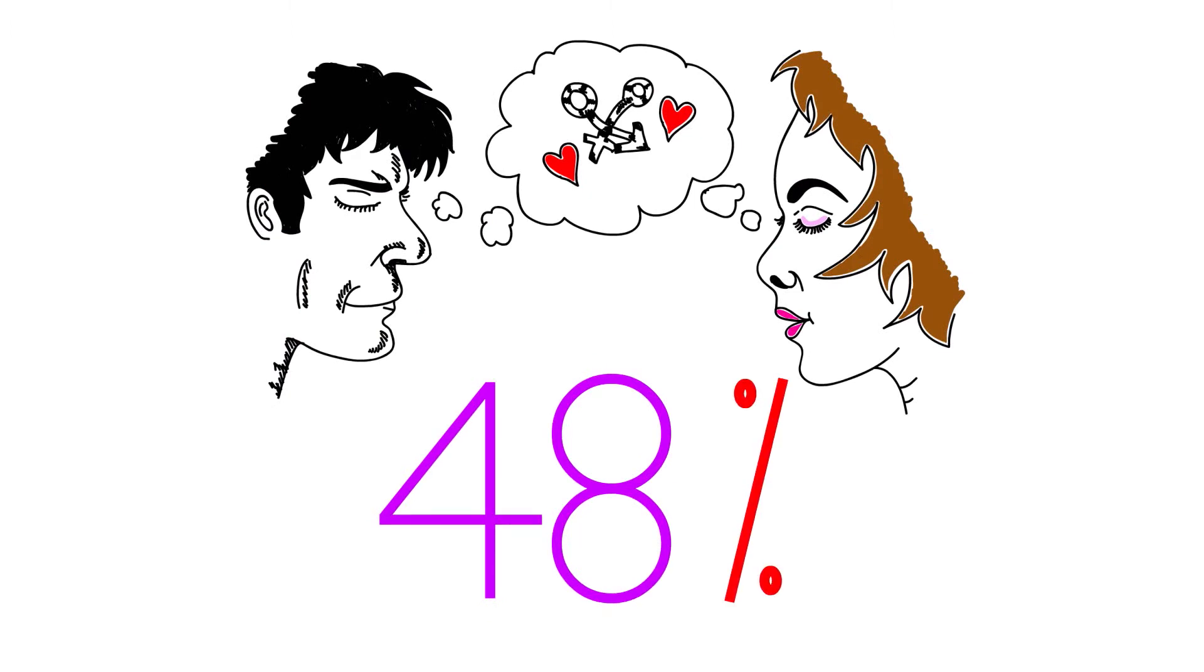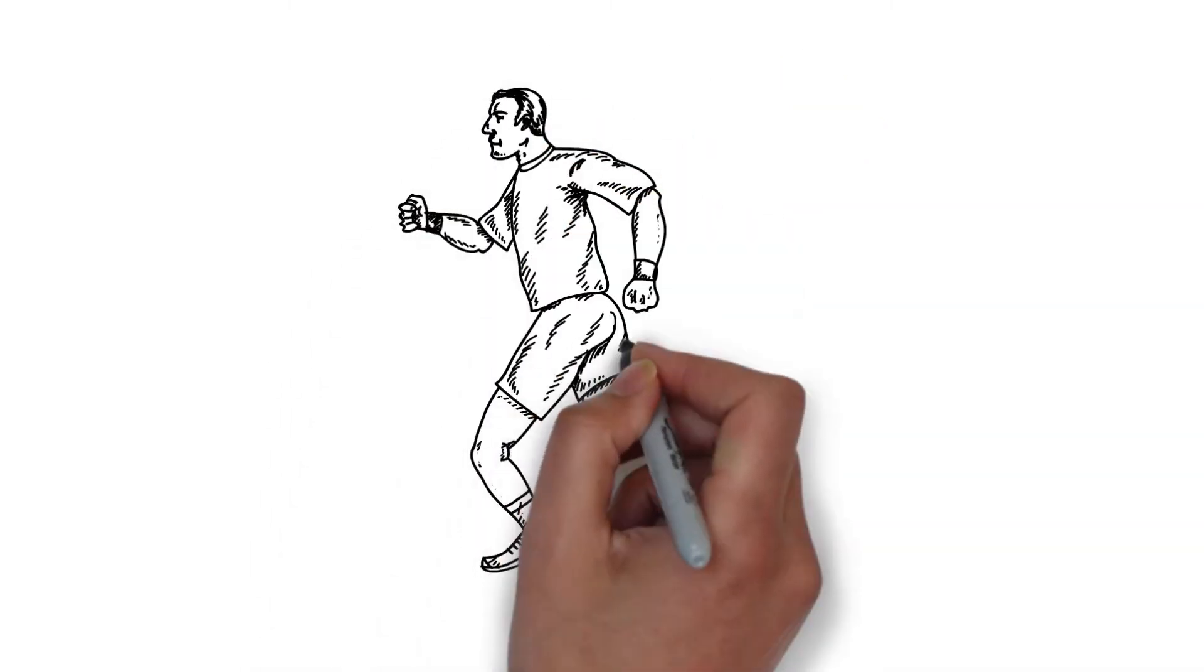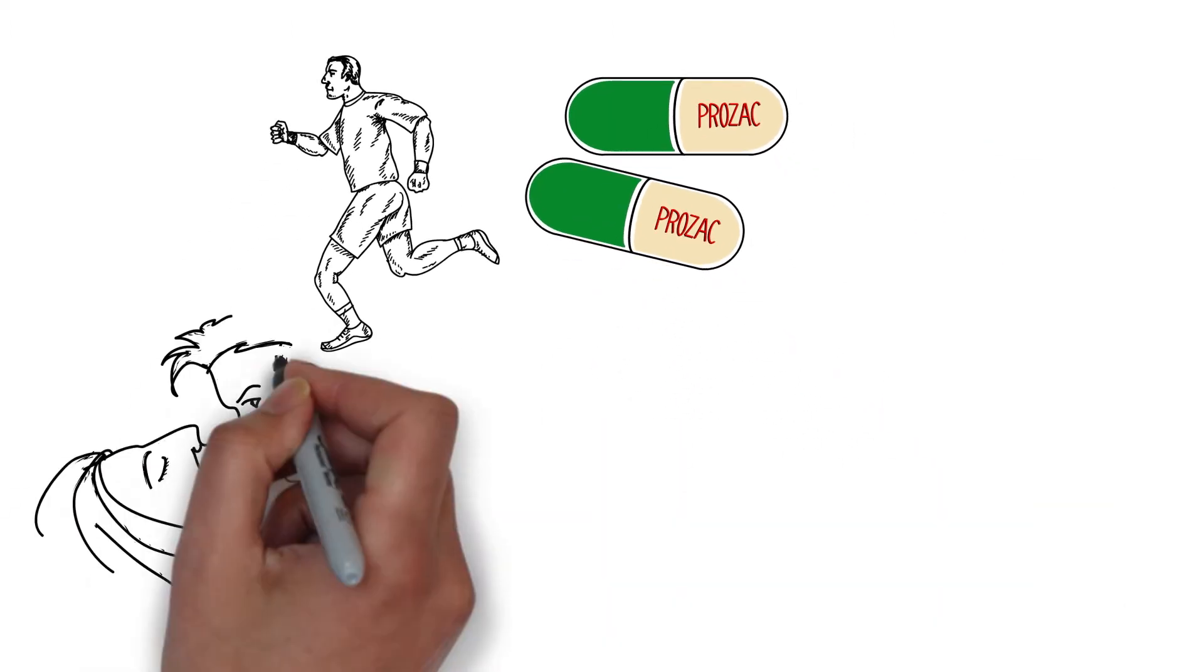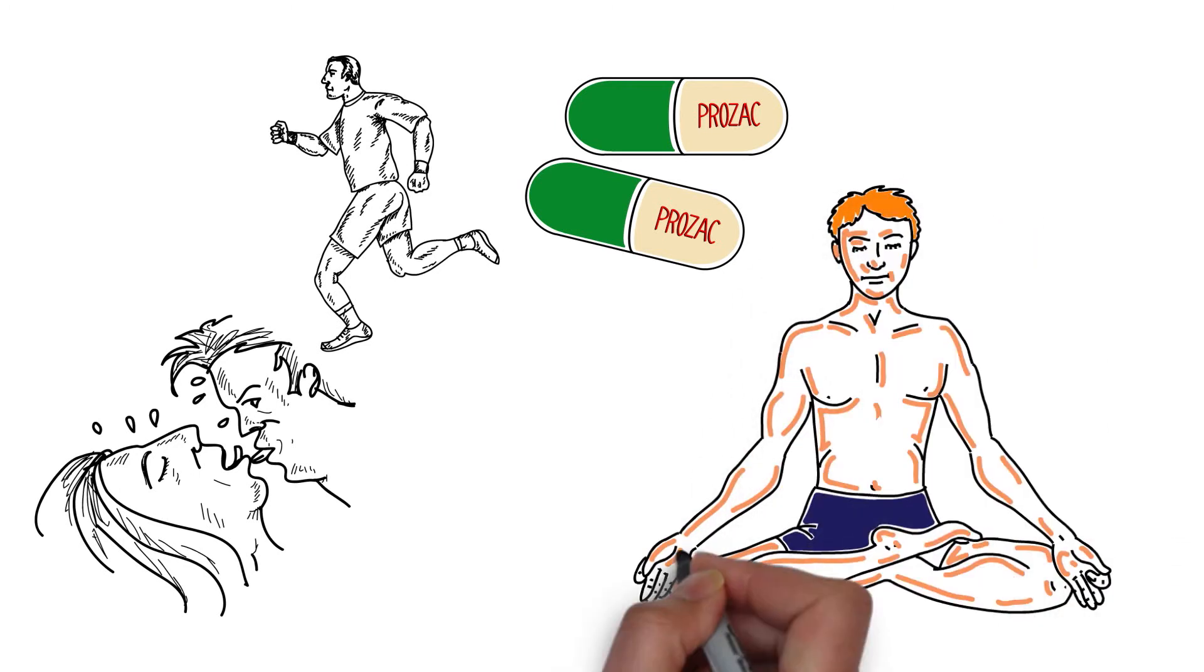Many activities can increase the rate at which new brain cells are born, but only thoughtful, successful learning increases their survival. Cognitive enhancers like exercise, Prozac, and sex can make new cells. If you do mental training, you'll keep alive more cells than you produced.